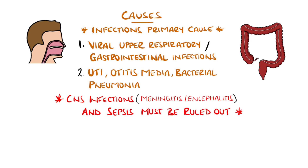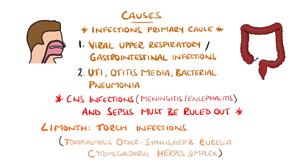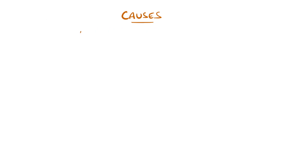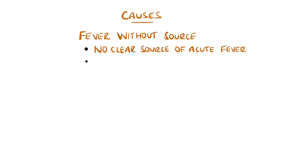The most likely infections vary slightly with age. For example, the TORCH infections are more likely to be found within the first month. In some cases there will be no obvious source of the infection — termed a fever without source — which in most cases is caused by a self-resolving viral illness.